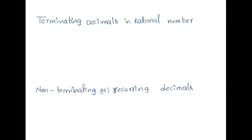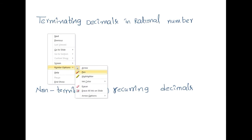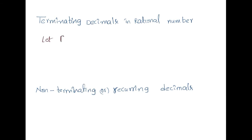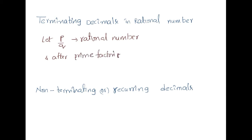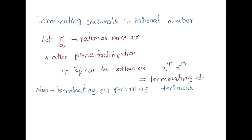So, why is this terminating and non-terminating? For a given rational number in P by Q format, Q is the denominator. After finding the prime factors of Q, if Q can be written as 2^m into 5^n, then the denominator is of the terminating decimal form.